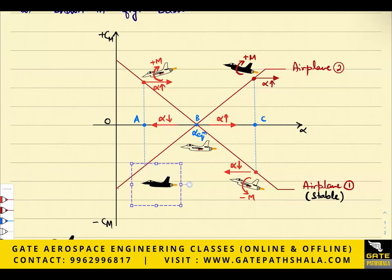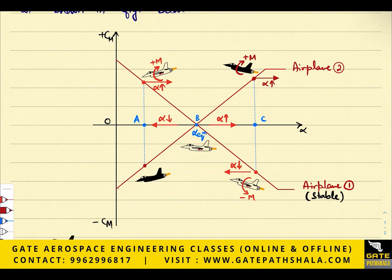Now let us look at airplane two on the other end. Suppose due to some gust the angle of attack got decreased. At that point, the pitching moment is negative. So the airplane about the CG is creating a negative pitching moment, which will further decrease the angle of attack. So what can we say about airplane two? It is unstable — because it has no tendency to come back towards its equilibrium angle of attack or equilibrium position.